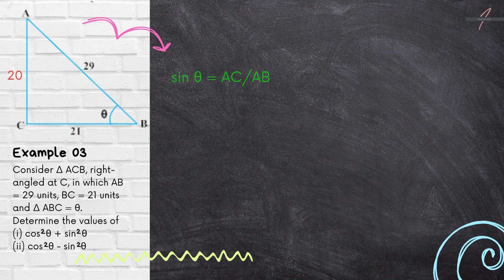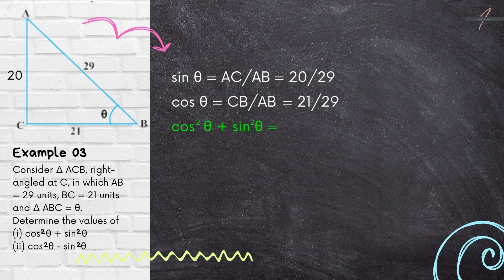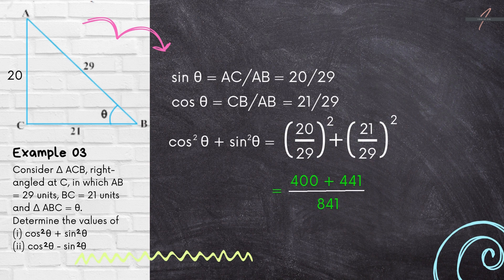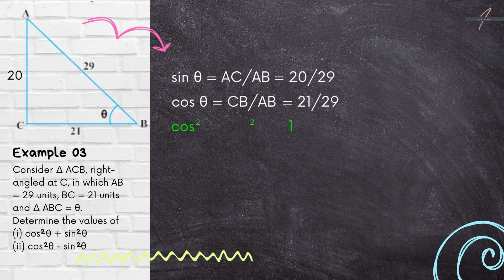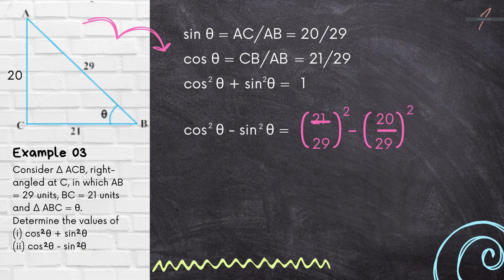Now sin θ = AC/AB = 20/29, and cos θ = CB/AB = 21/29. So cos²θ + sin²θ = (21/29)² + (20/29)² = 1. You will study later on that cos²θ + sin²θ is always equal to 1.